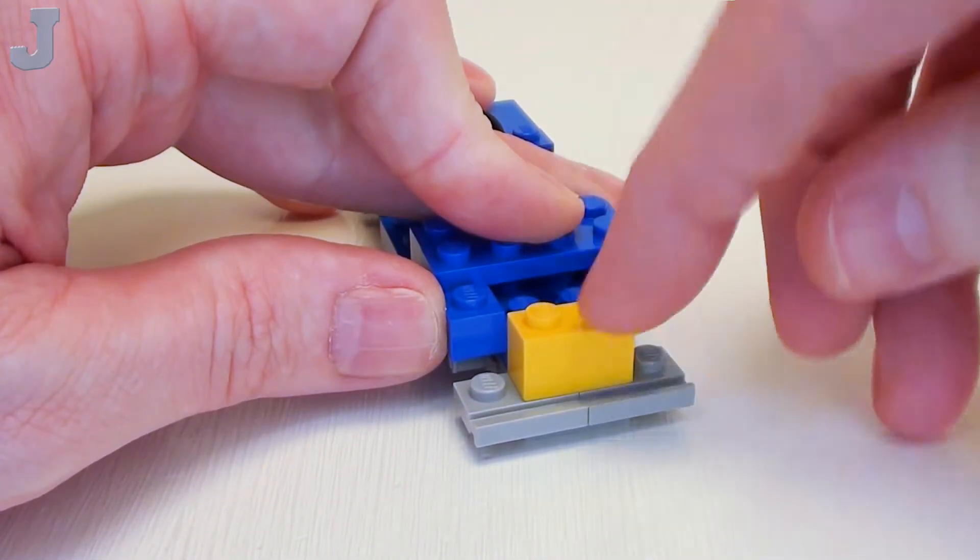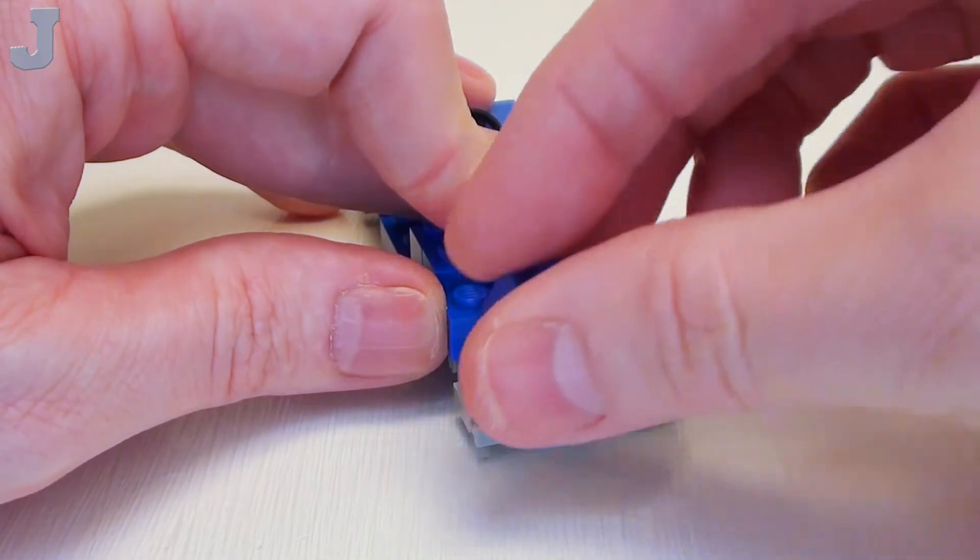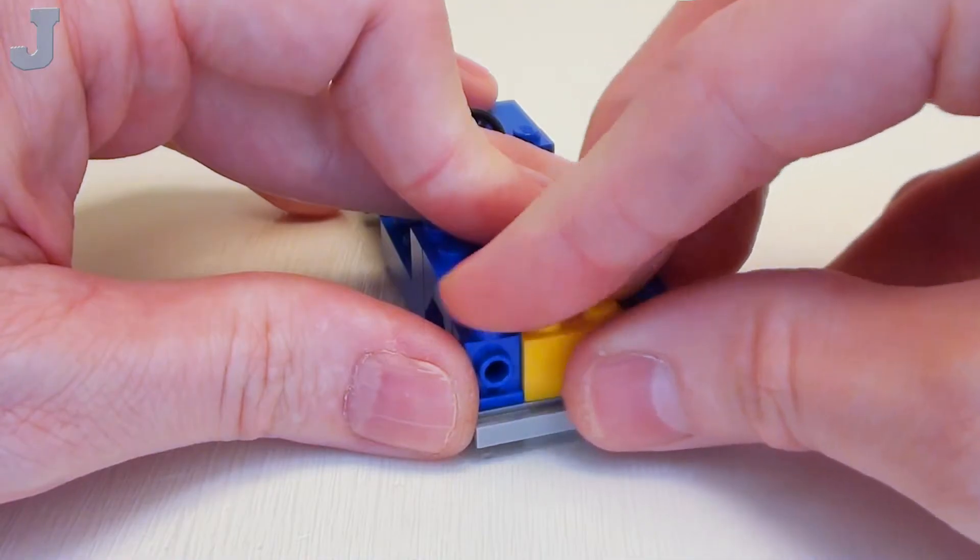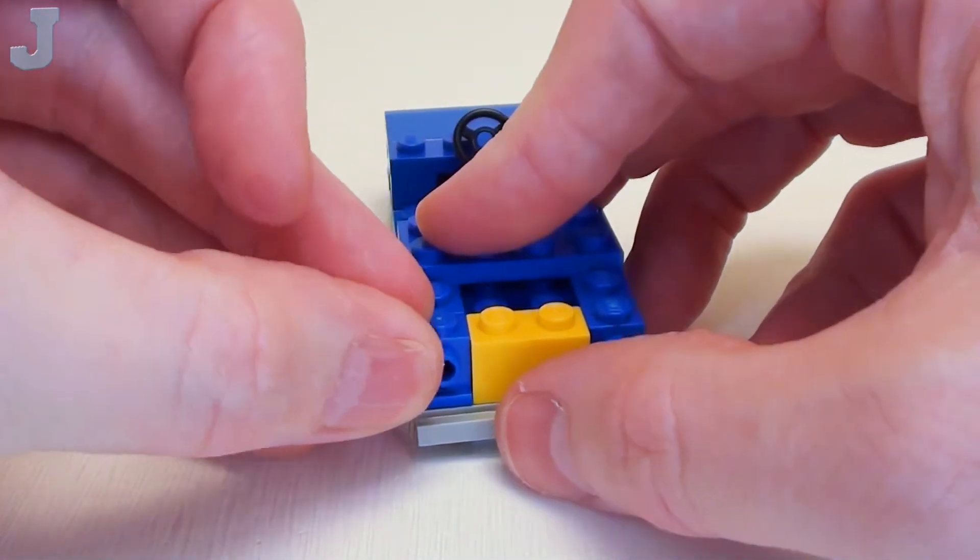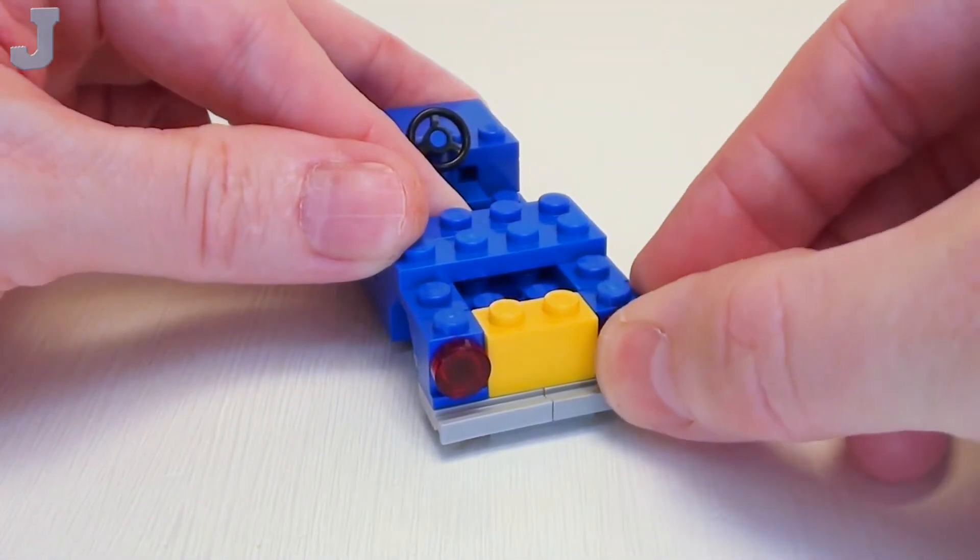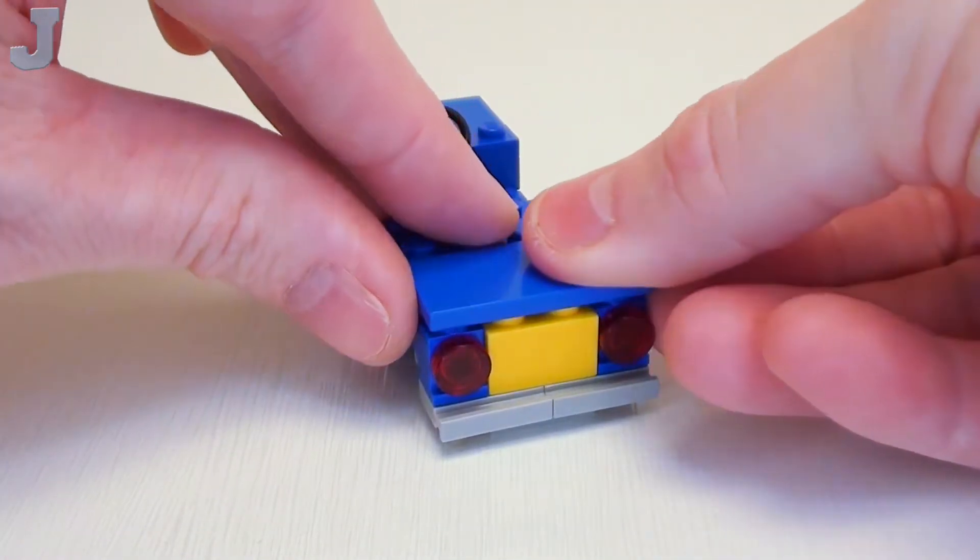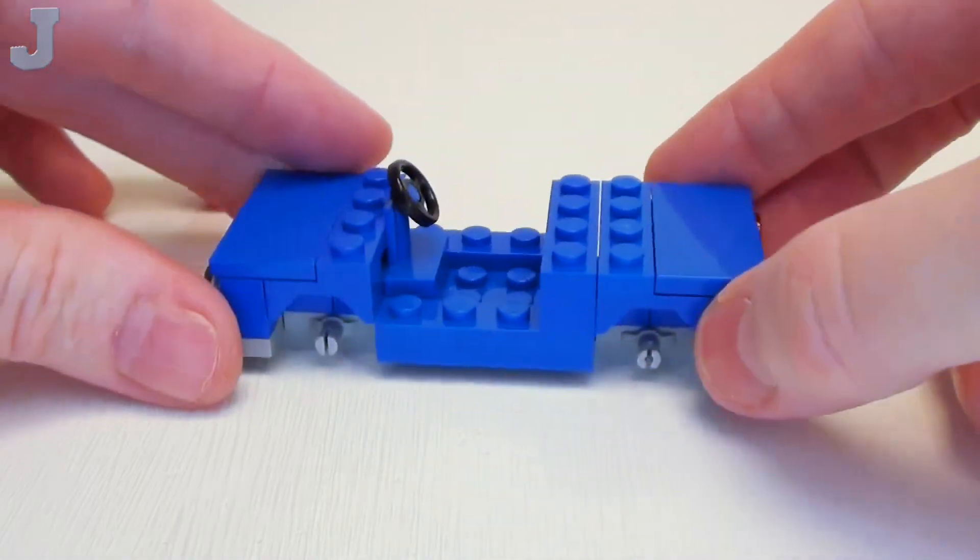a 1 by 2 brick. This is going to be our license plate. Two more 1 by 1 angular headlight bricks, then a set of transparent red round 1 by 1 flat tiles for rear taillights, and a 2 by 4 to finish up the trunk portion of the car.